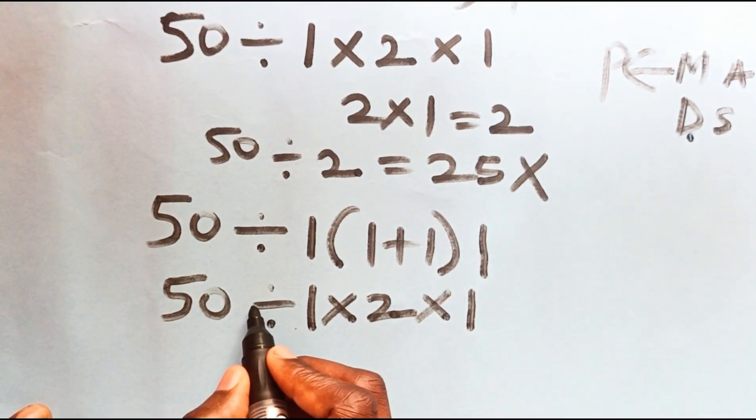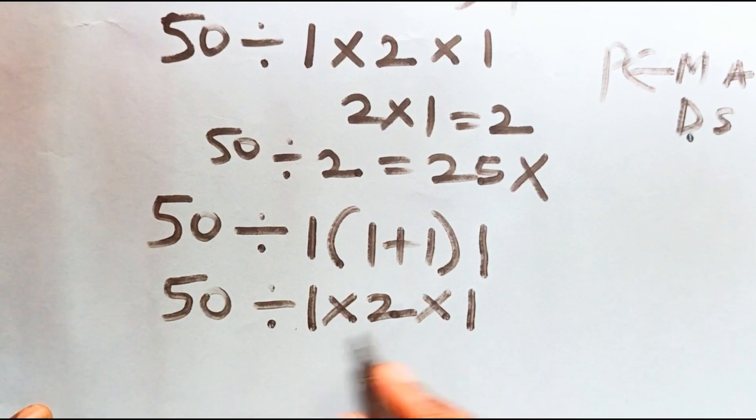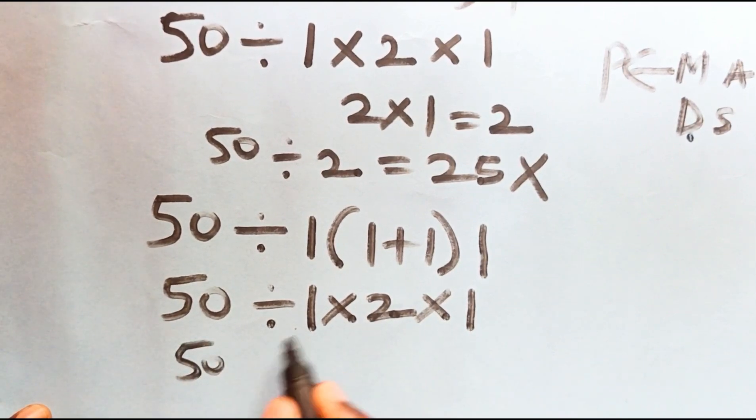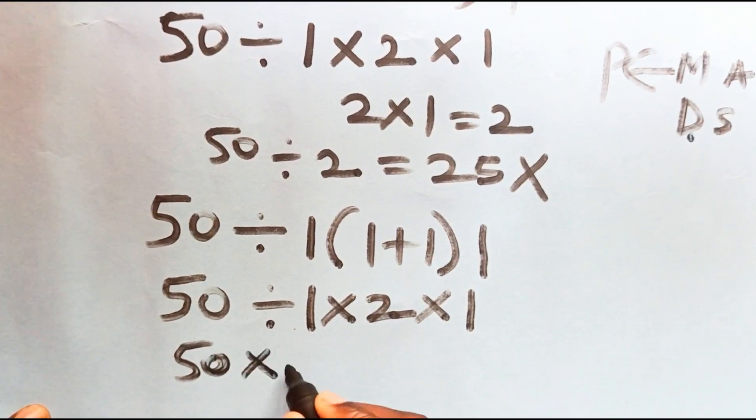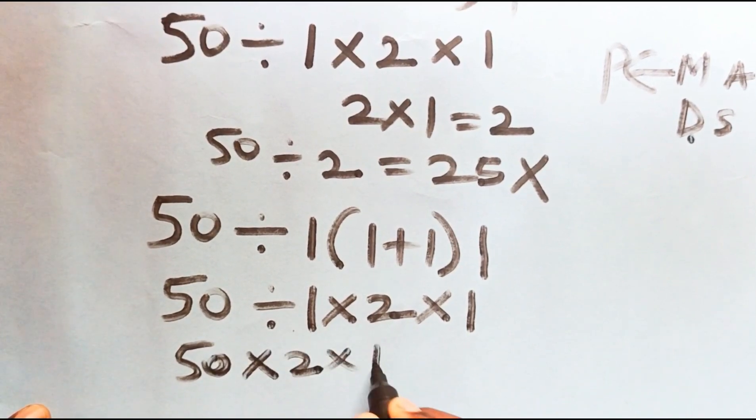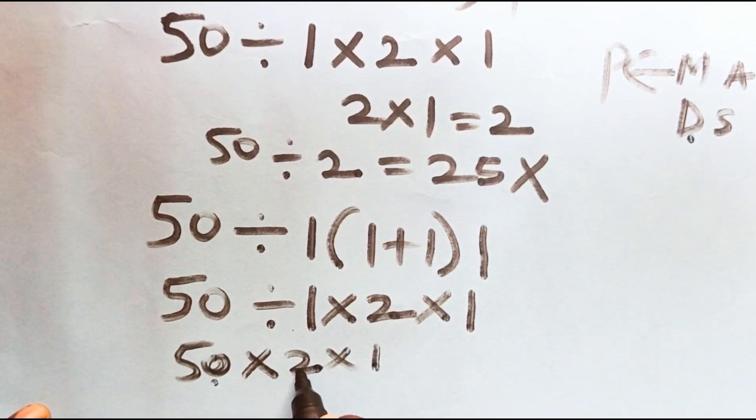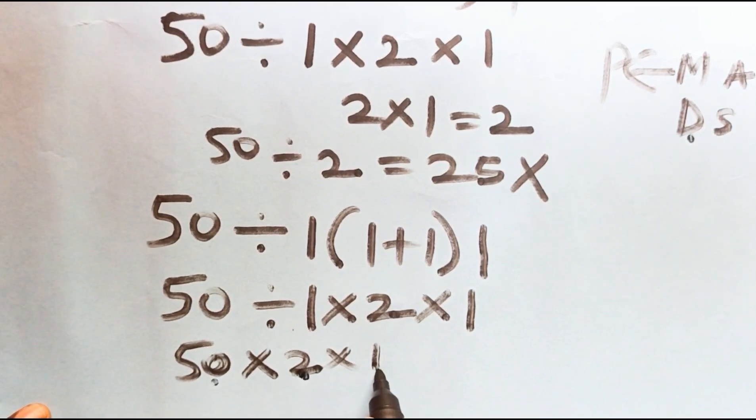50 divided by 1 gives you 50, then times 2 times 1. 50 times 2 gives you 100. 100 times 1 gives you 100.